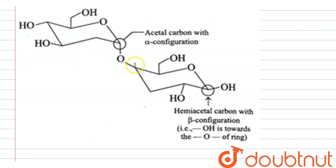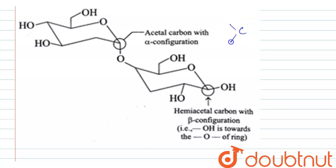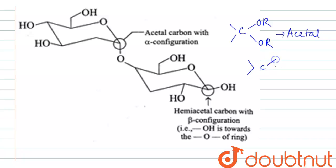Let us look at this diagram. When the carbon is attached to two alkoxy groups, then we call it an acetal. When it is attached to only one alkoxide group, then we call it a hemiacetal.